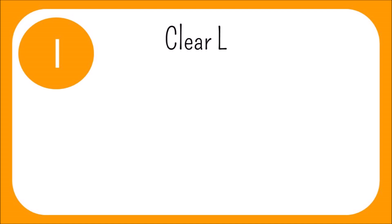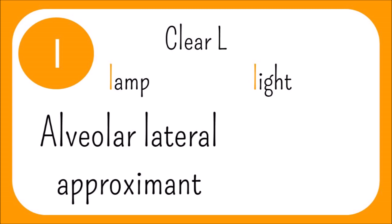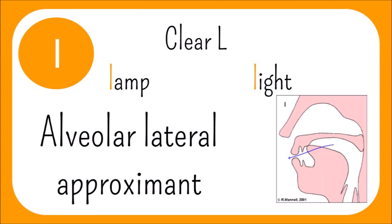L is a complex one. It has two allophones in English, depending on its context. Before vowels, it can be called clear L, and appears in words such as lamp or light. In this case, it is articulated as an alveolar lateral approximant, with the blade of the tongue just touching the alveolar ridge behind the top teeth.